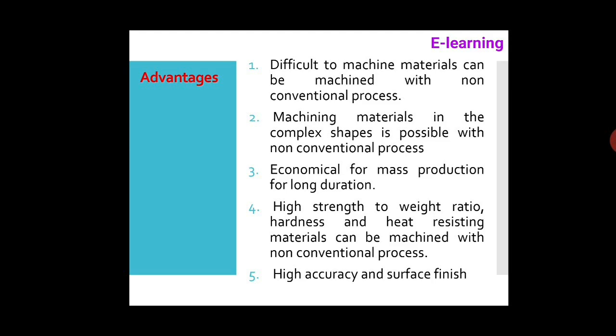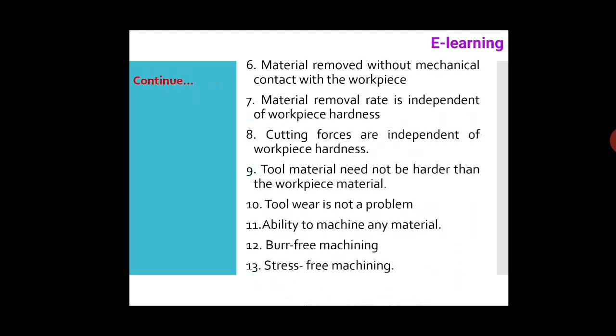Advantages of non-conventional machining: difficult-to-machine materials can be machined, and complex shapes can be produced easily. Mass production is economical, and materials with high strength-to-weight ratio, hardness, and heat resistance can be machined. High accuracy and superior surface finish can also be achieved.